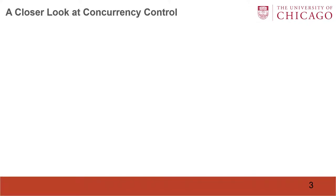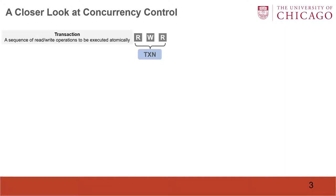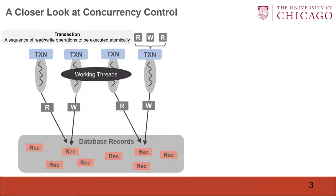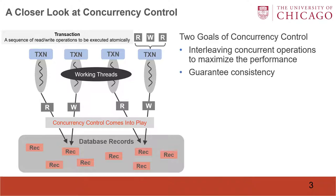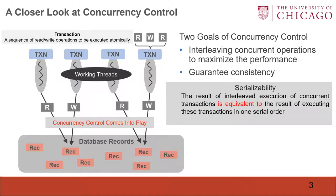Let's take a closer look at concurrency control. Database is accessed via transactions, which are sequences of read-write operations to be executed atomically. Transactions are executed concurrently by multiple working threads to access the database records. Concurrency control is used to coordinate concurrent operations. It has two goals: first, it interleaves concurrent operations to maximize performance.